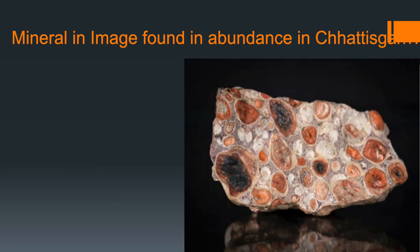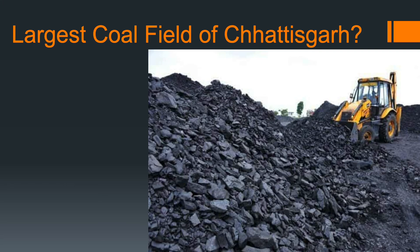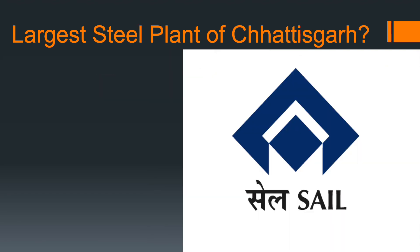Next: name the mineral found in abundance in Chhattisgarh. Answer: Bauxite. Next: what is the largest coal field of Chhattisgarh? Answer: Korba Coal Field. Last question: what is the largest steel plant of Chhattisgarh? Answer: Bhilai Steel Plant. Bhilai Steel Plant is an 11-time winner of the Prime Minister Trophy for Best Integrated Steel Plant in the Country.